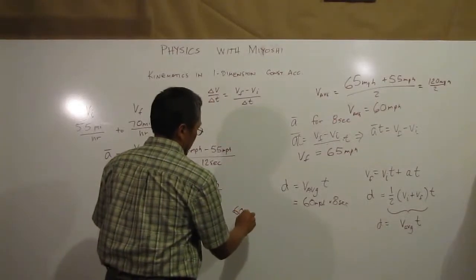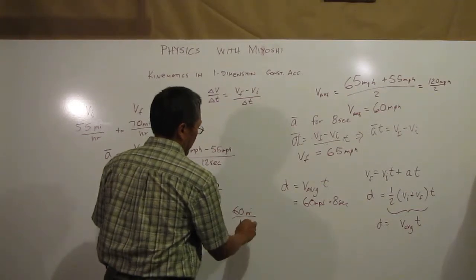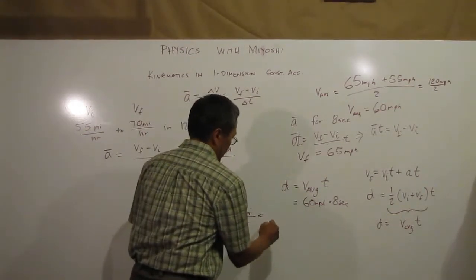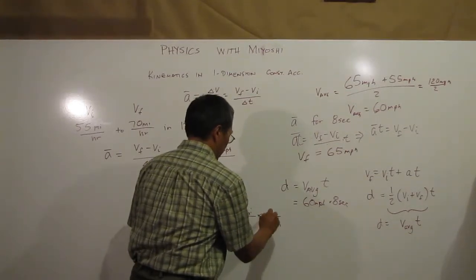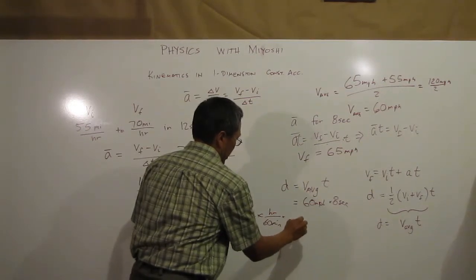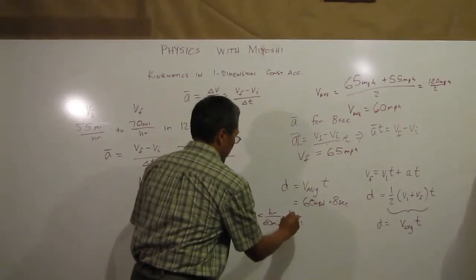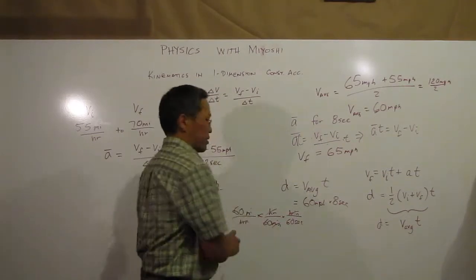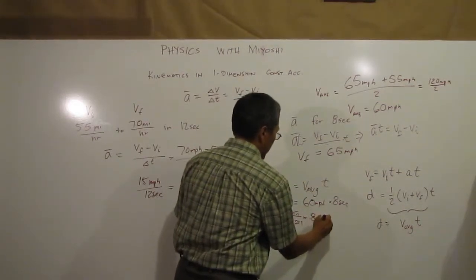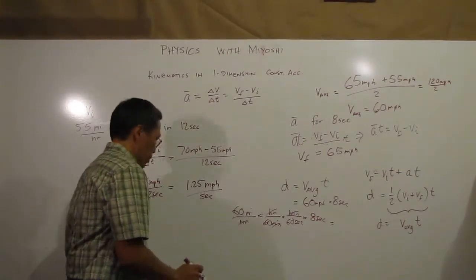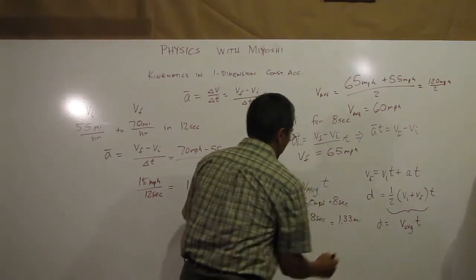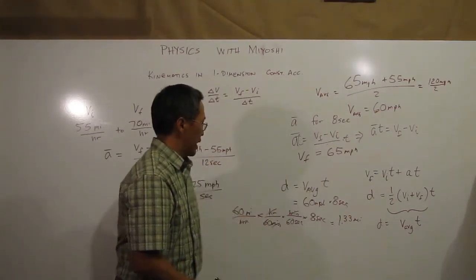So I have 60 miles per hour. I'll change that, I'll divide that by 60 minutes per hour, and I'll divide that by 60 seconds per minute. That gets rid of my minutes, that gets rid of my hours. I'll multiply that by my 8 seconds, and I get 1.33 miles.